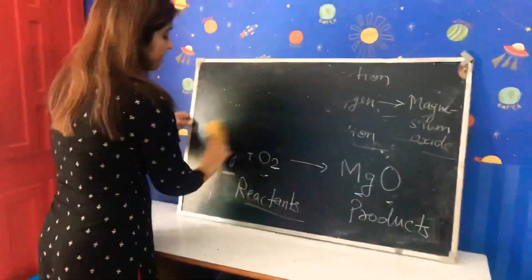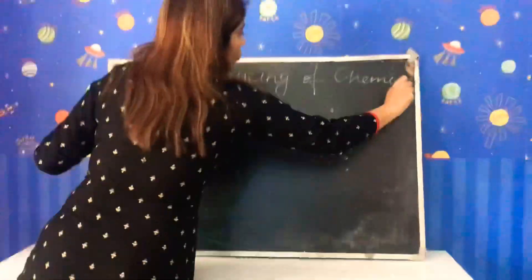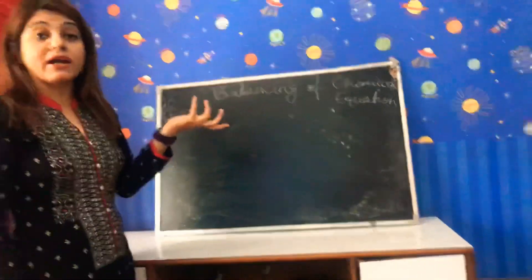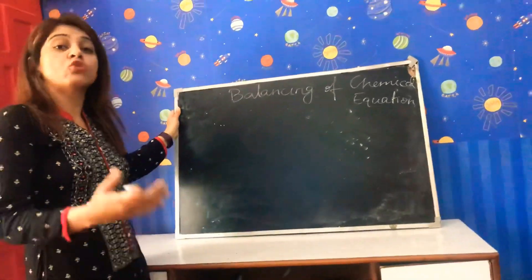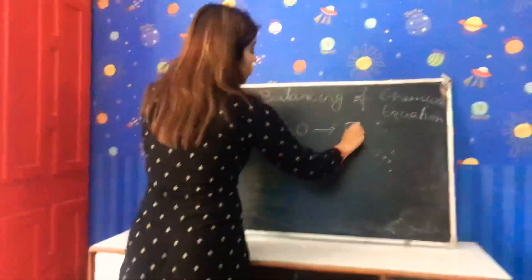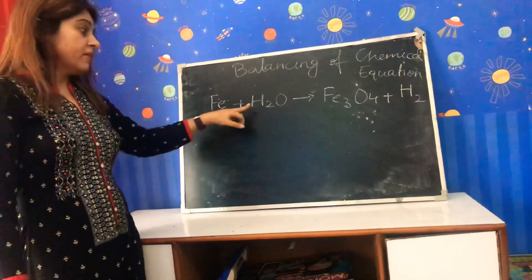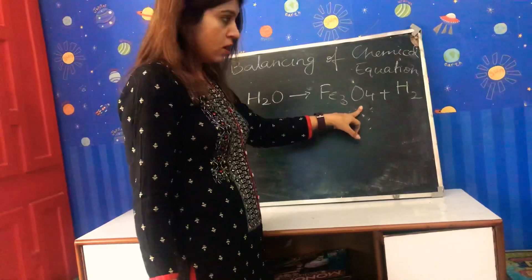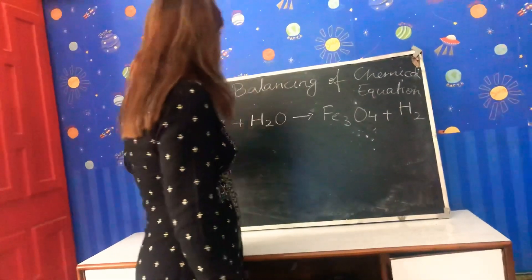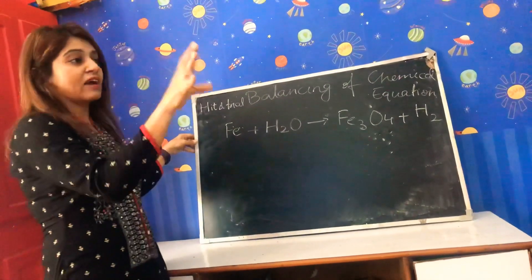So how can we balance this chemical equation? The method we use is called the Hit and Trial method. In the Hit and Trial method, we try different numbers — if they fit, we keep them; if they don't fit, we try again. That means we place a number and check if it balances; if not, we try a different number.